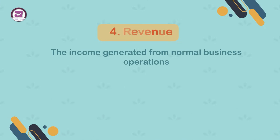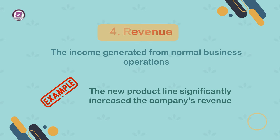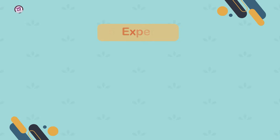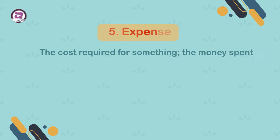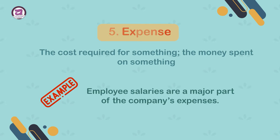4. Revenue. The income generated from normal business operations. Example: the new product line significantly increased the company's revenue. 5. Expense. The cost required for something — the money spent on something. Example: employee salaries are a major part of the company's expenses.